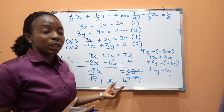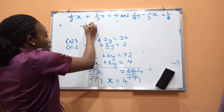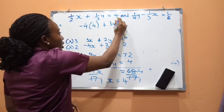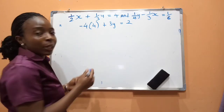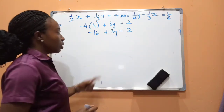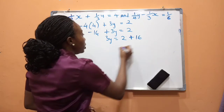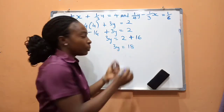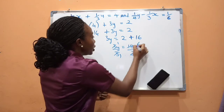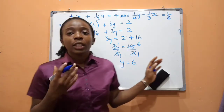Now substitute x = 4 into equation 2: −4(4) + 3y = 2, giving −16 + 3y = 2. Collecting like terms: 3y = 2 + 16 = 18. Dividing both sides by 3 gives y = 6. We have successfully found x = 4 and y = 6.